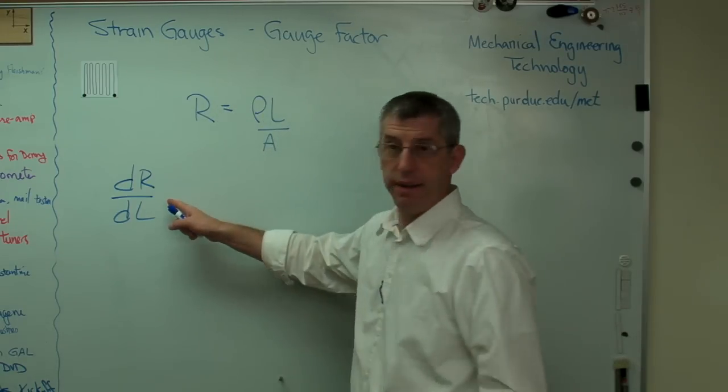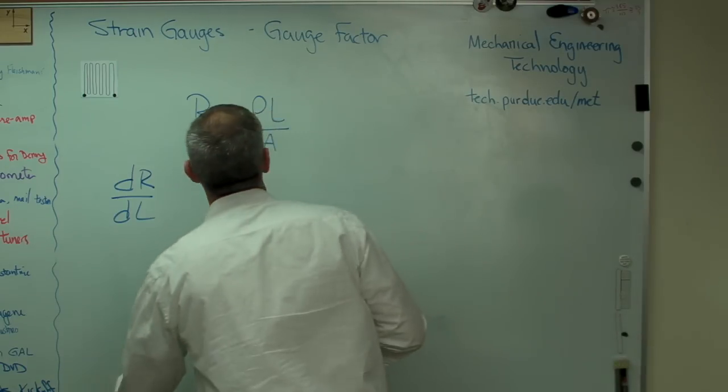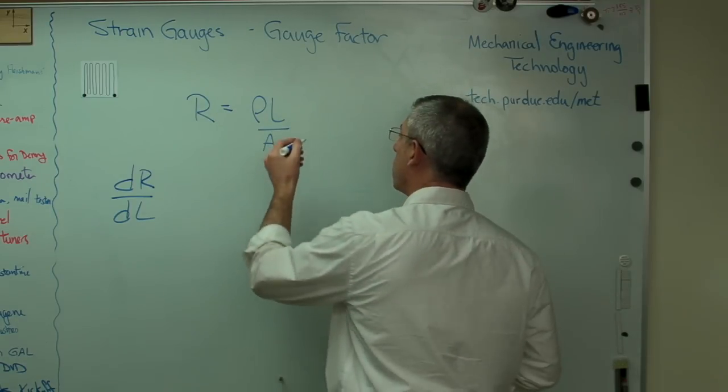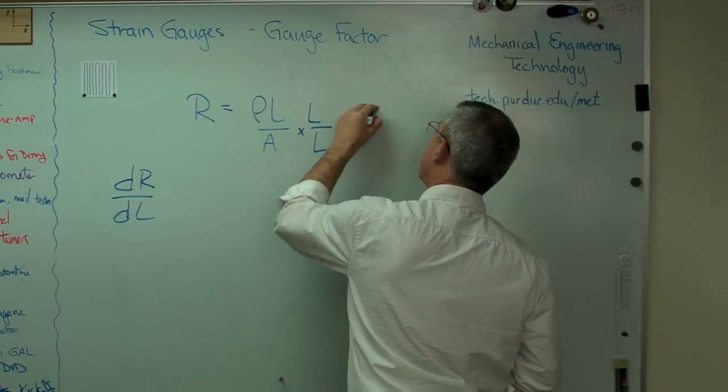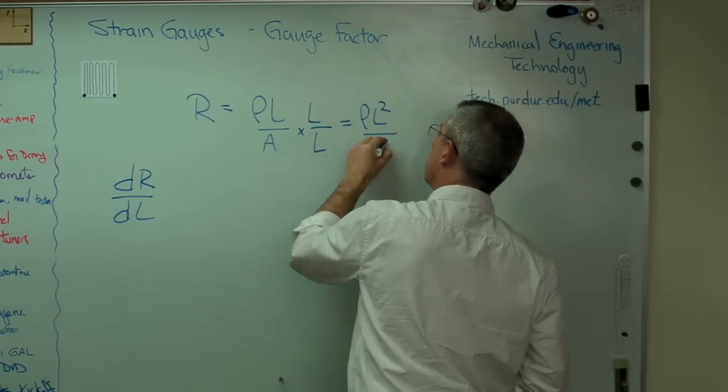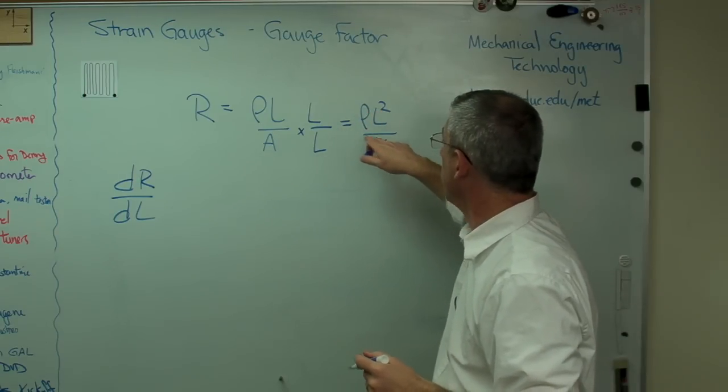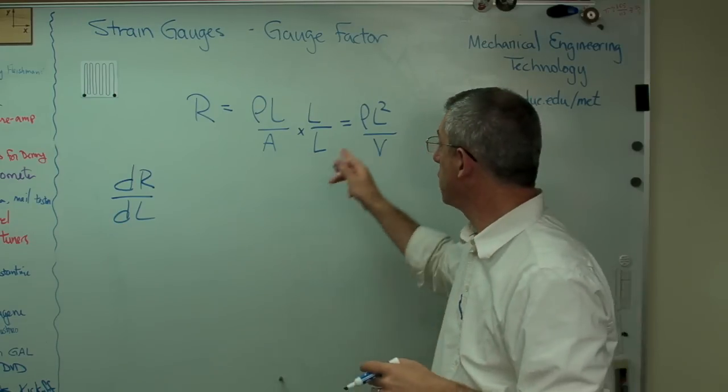But area changes. Well, here's the way to do this. Now, I can't tell you I would have thought of this. I looked this up in reference work. Multiply that so you get that. Rho L squared over V. Now, I can multiply by L over L. That's just one. So I'm not changing my expression any.